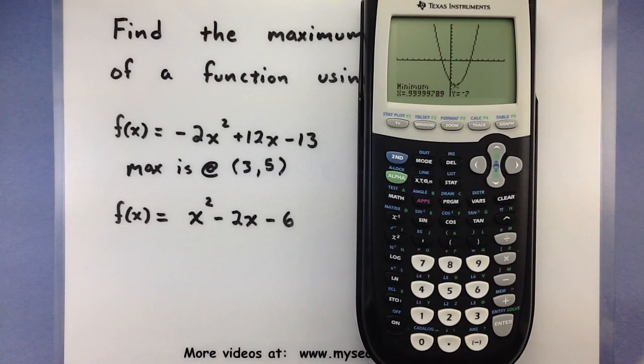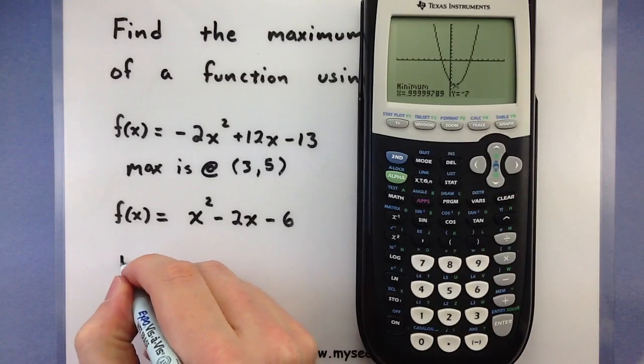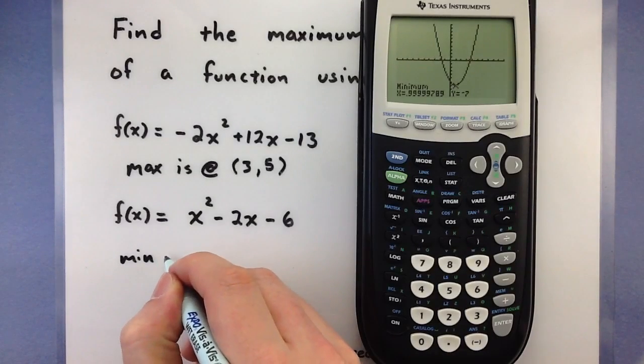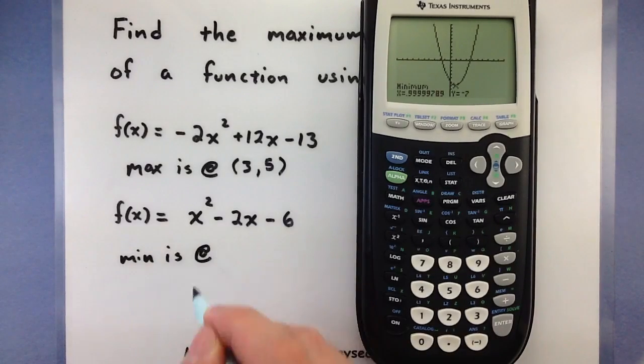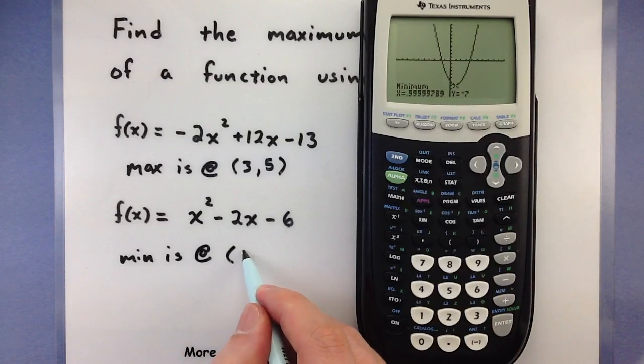Alright, we'll let the calculator think for a bit. And it says the minimum is at 0.99999789 and y is equal to -7. So we'll do some rounding and say the min is at (1, -7).